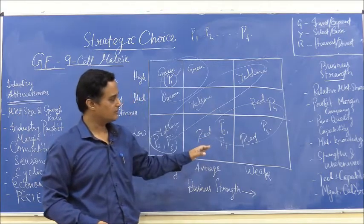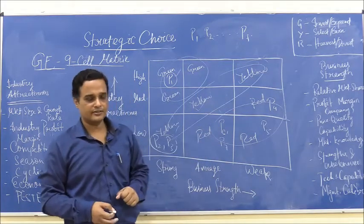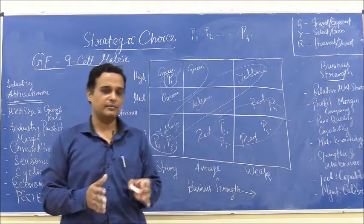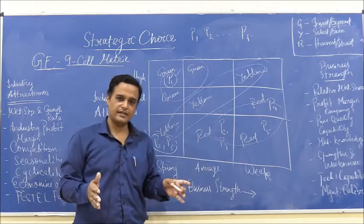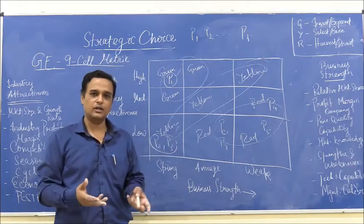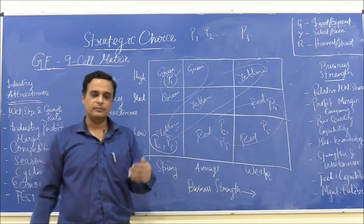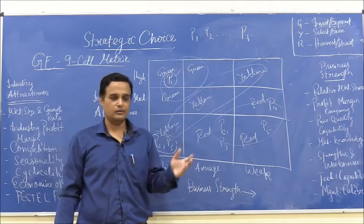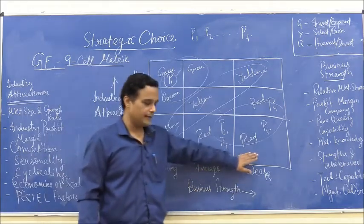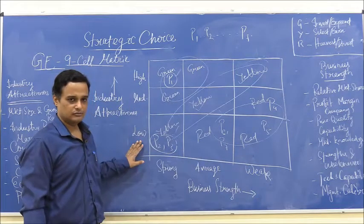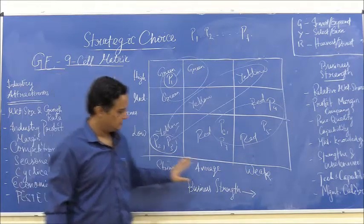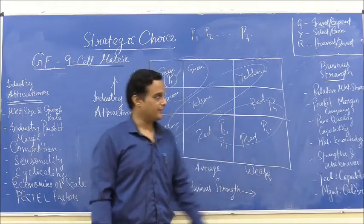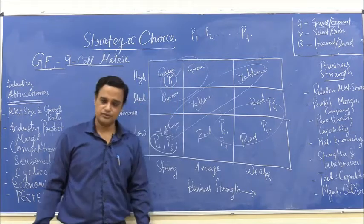The last one that remains is the red cells. GE advises that all SBUs which feature in these three cells must either be harvested without expanding anymore - the company should choose to continue earning without any costs incurred. Or if the situation is really bad, like in this cell where the industry is not attractive at all and its own business is going weak, in that case the company should decide to divest, it should choose to divest.